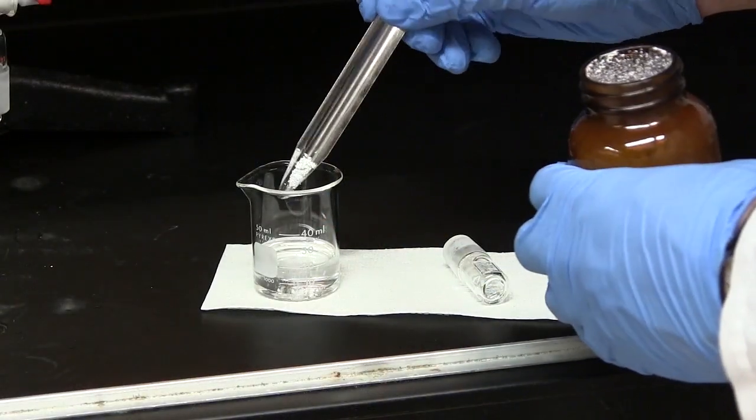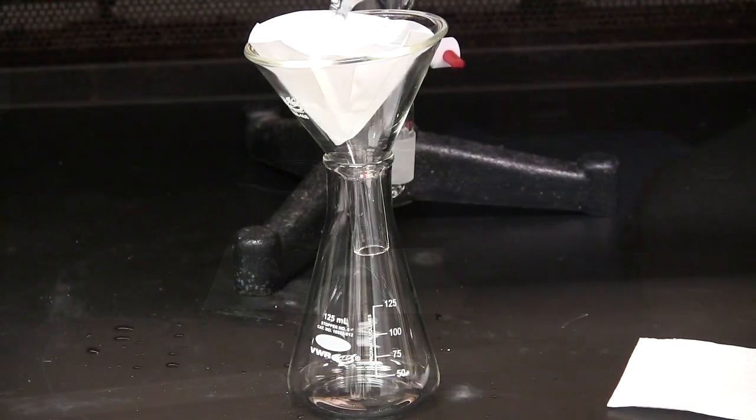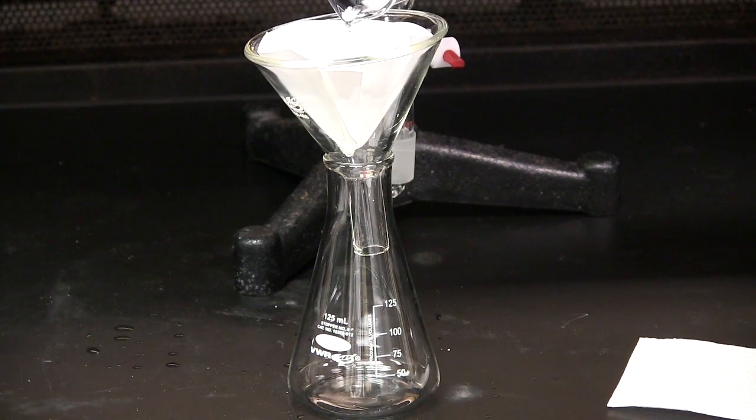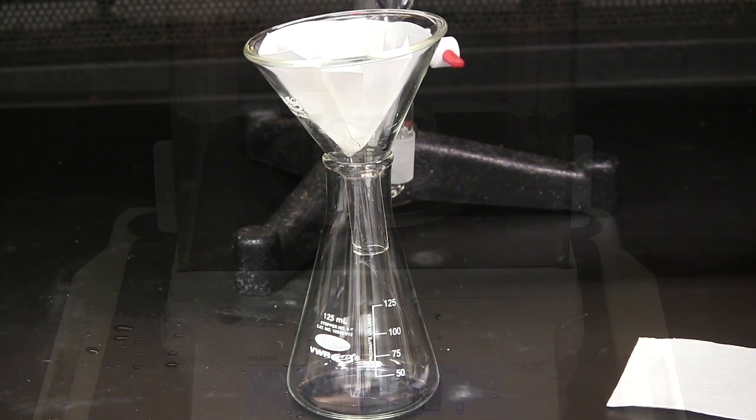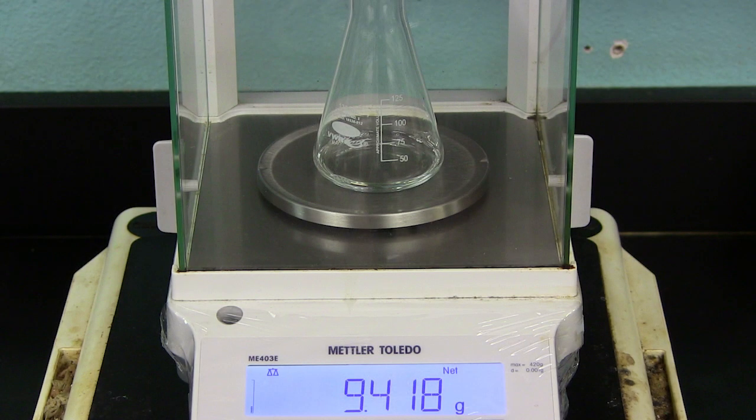Use a drying agent to dry the organic layer. Then filter the final product into an Erlenmeyer flask of known mass. Measure the mass of the flask and the isolated liquid after the filtration is complete.